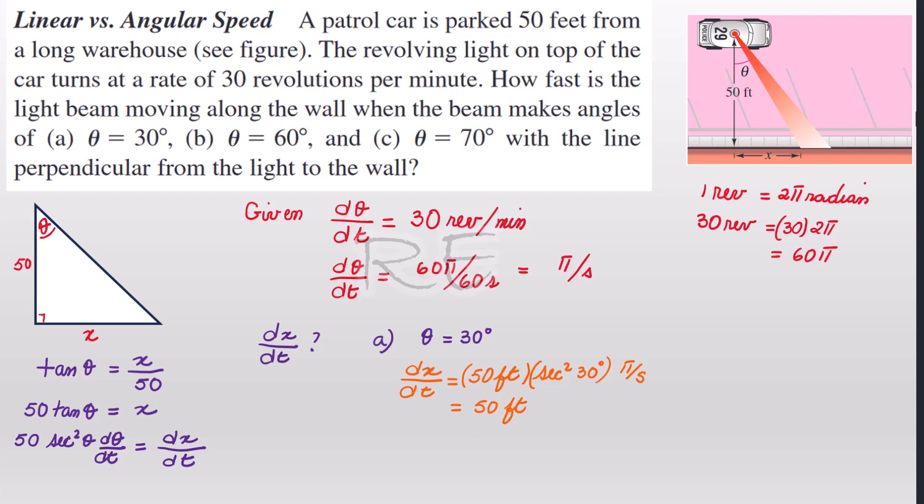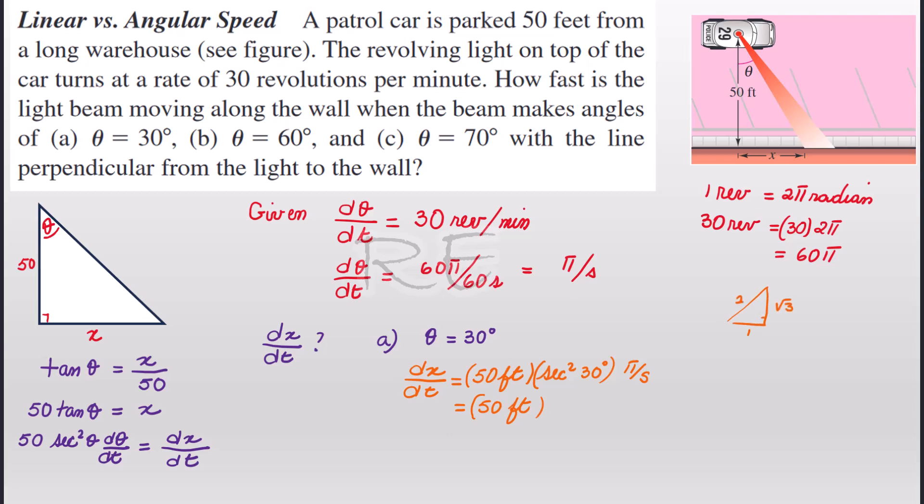Now we need to find the value of secant 30. And 30 is a special angle, one to square root of three. So secant is hypotenuse over adjacent. So it's 2 over √3, 2 over √3 squared times π radians per second.